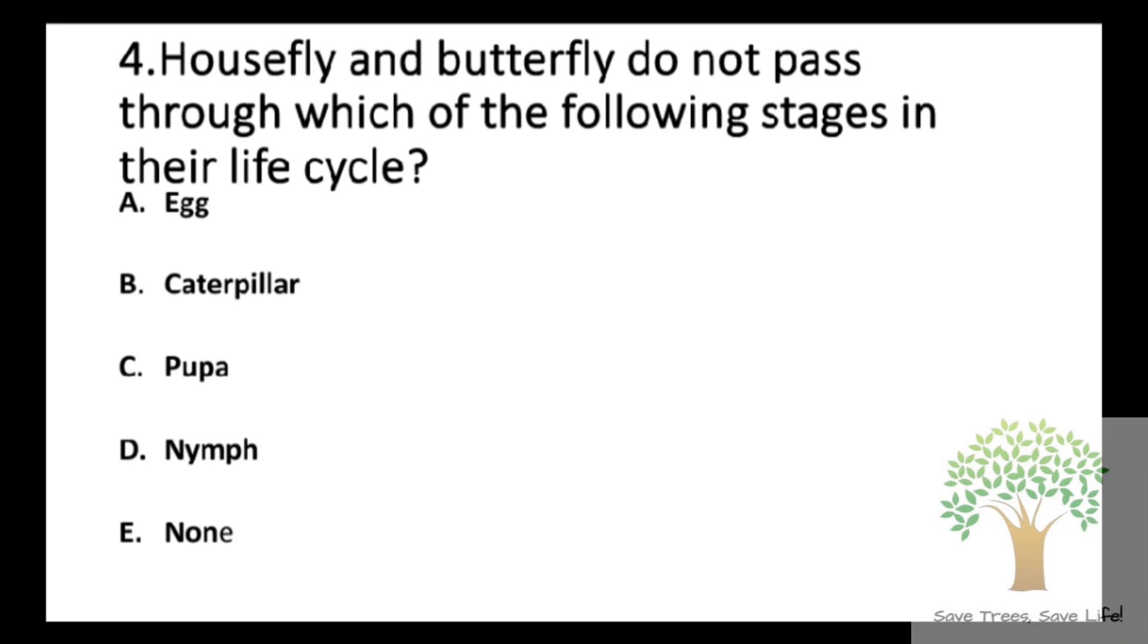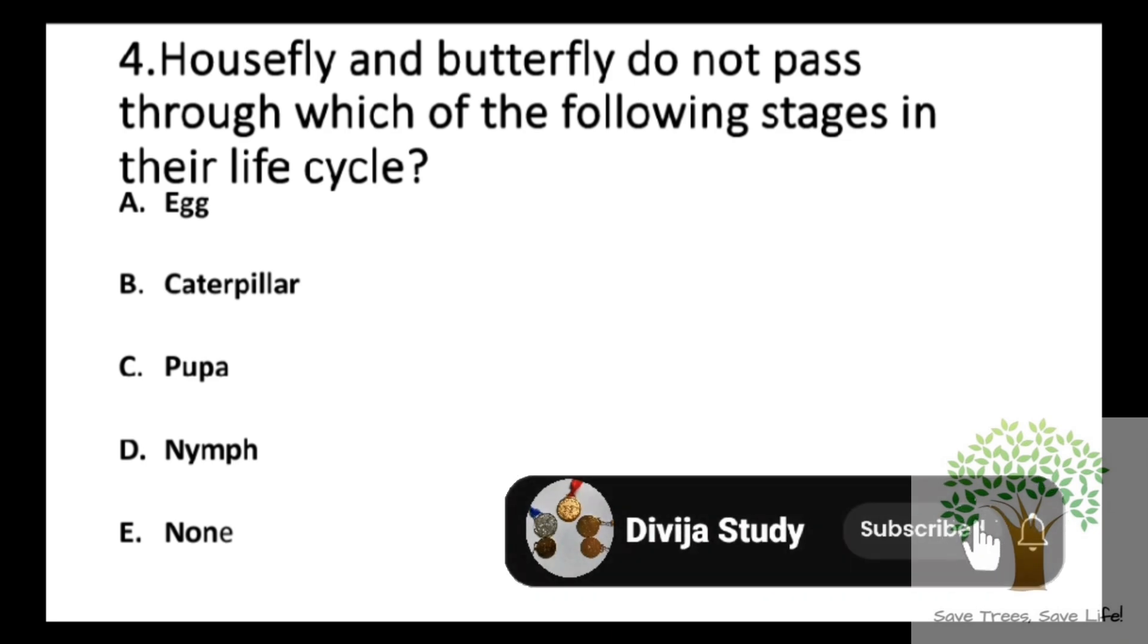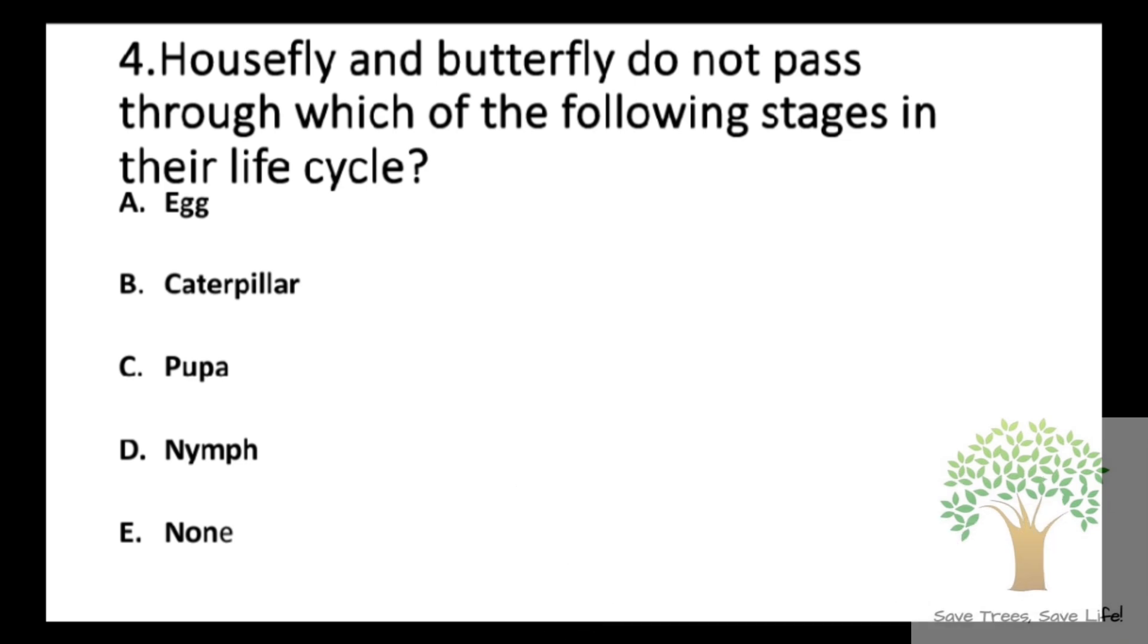Question number 4: Housefly and Butterfly do not pass through which of the following stages in their life cycle? A. Egg, B. Caterpillar, C. Pupa, D. Nymph, E. None of these. So the answer is option D, Nymph.